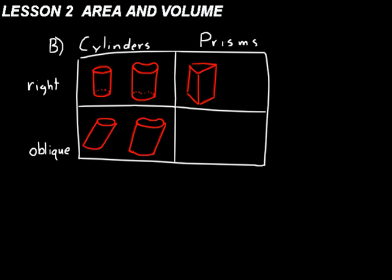With polygon bases, the sides are line segments. A right prism could have four sides or any number of sides, because polygon means many sides. Oblique prisms are like oblique cylinders, except they have polygons for their bases — the sides are not perpendicular to the bases.